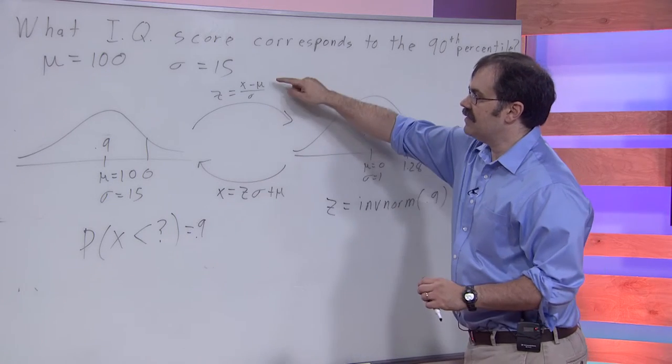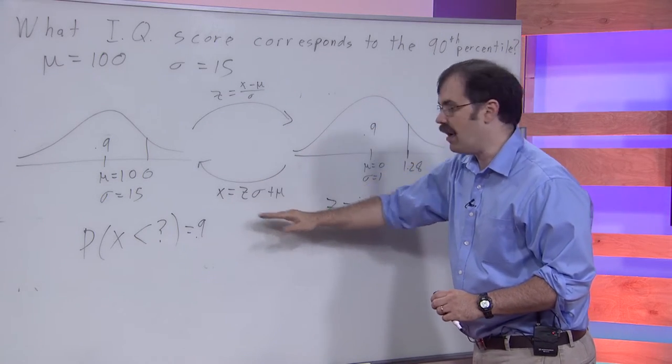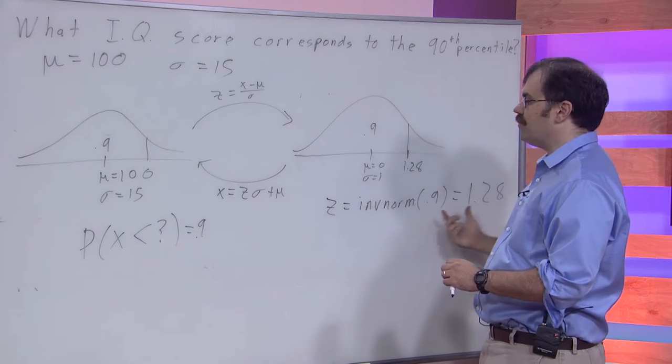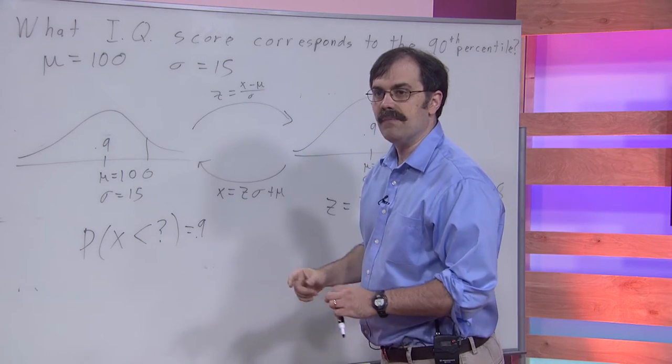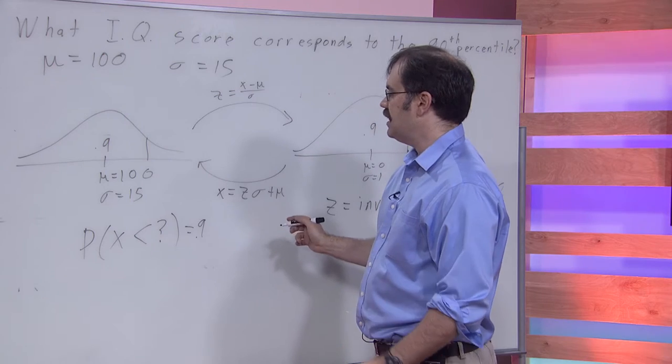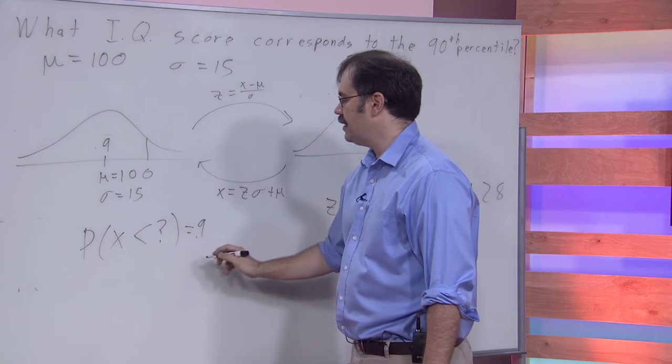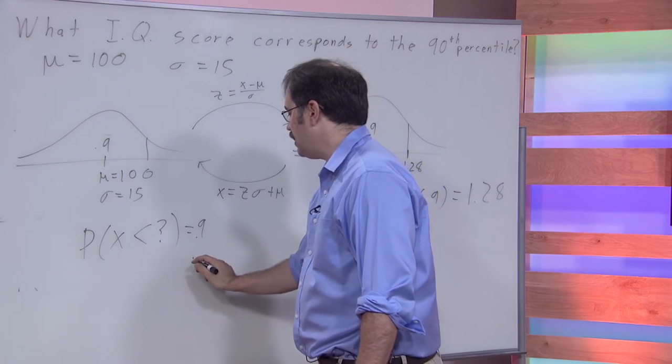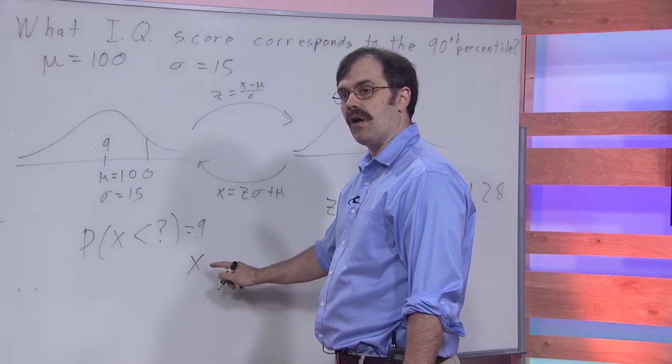So we can use this formula written this way to convert this information into something about IQ scores that will answer our question. So, just plugging in, we have that the IQ score, our x, is equal to our z-value,